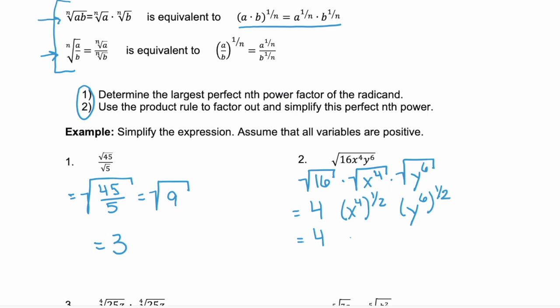4 times one half simplifies to just x squared. And y to the sixth to the power of one half — 6 times one half — simplifies to just a power of 3. So this example was easiest if we broke each one apart.